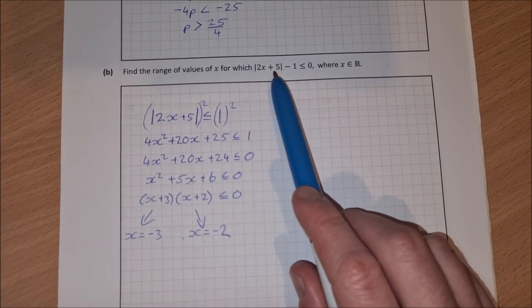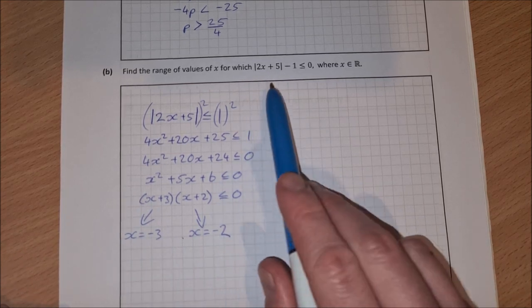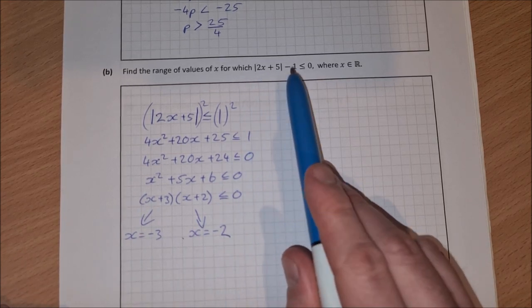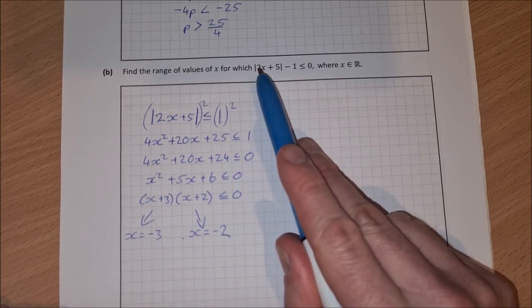Now, because it was a modulus equation and I squared it, I have to check these solutions in the original equation to make sure that they still work. So if I sub in minus 3, 2 times minus 3 is minus 6. Minus 6 plus 5 is minus 1.